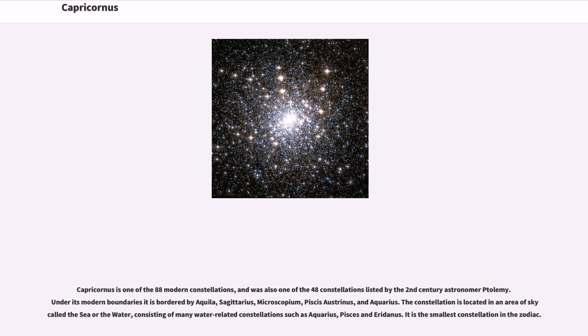The constellation is located in an area of sky called the sea or the water, consisting of many water-related constellations such as Aquarius, Pisces, and Eridanus. It is the smallest constellation in the zodiac.